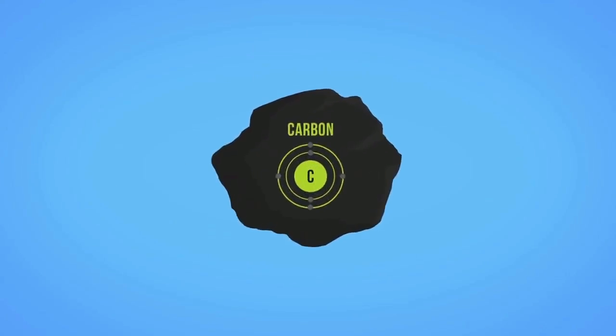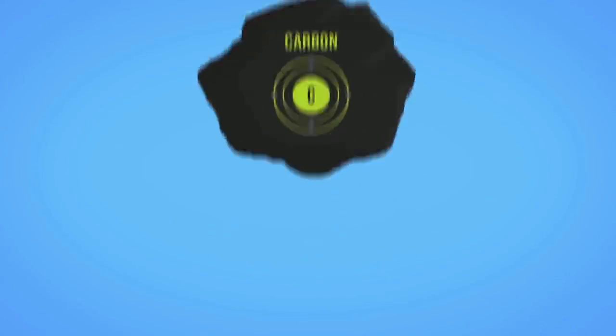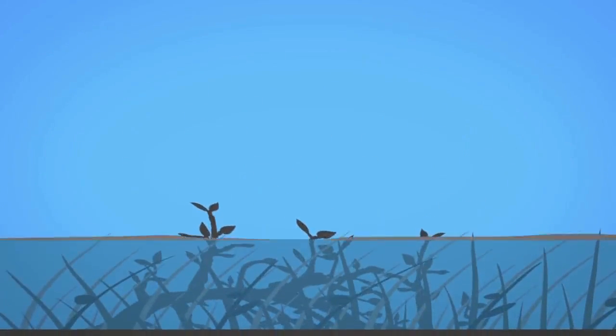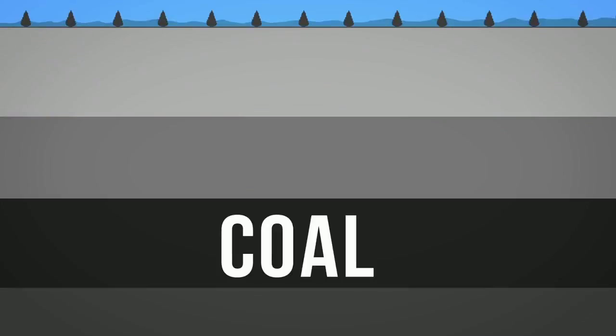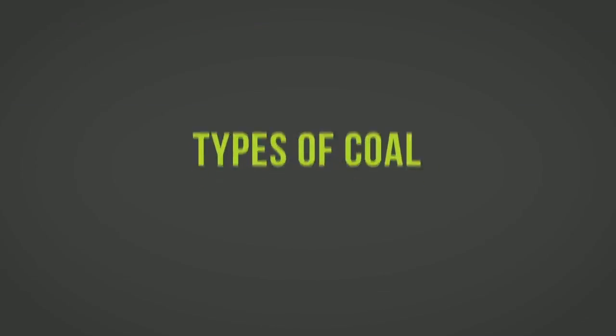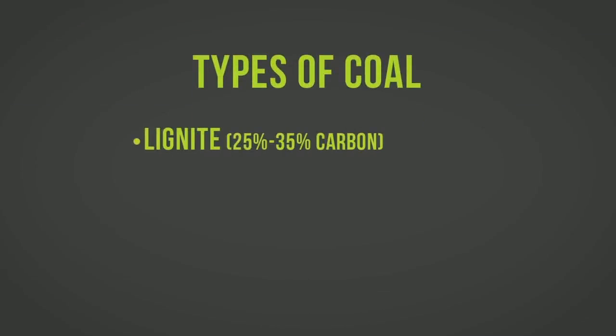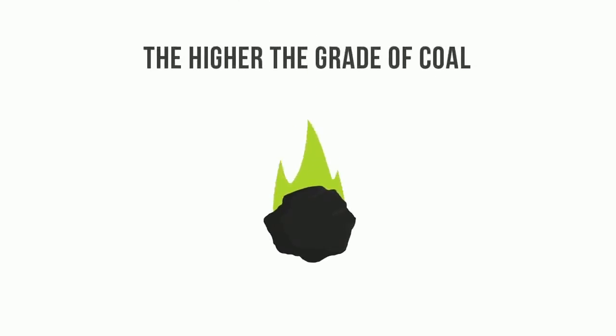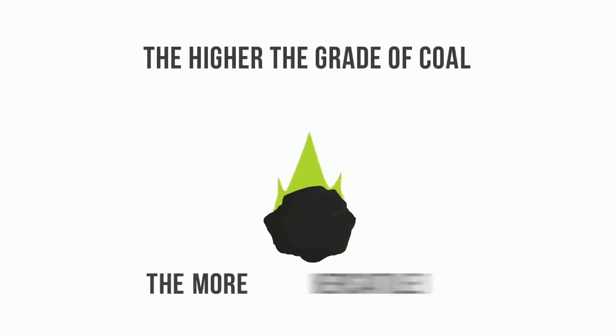Coal is a black or dark brown combustible rock made primarily of carbon. It was formed millions of years ago when ferns, plants, and trees died and fell into swamps. The swamp conditions prevented the organisms from decaying completely, and after millions of years of intense heat and pressure, coal was formed. Coal is classified into four main types, or ranks, based on carbon and heat content.